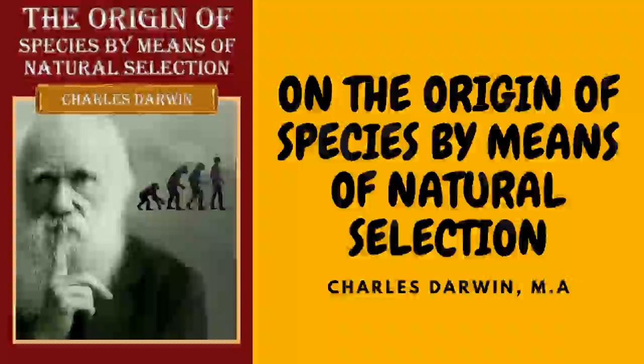Moreover, the possibility of making distinct races by crossing has been greatly exaggerated. There can be no doubt that a race may be modified by occasional crosses if aided by the careful selection of those individual mongrels which present any desired character; but that a race could be obtained nearly intermediate between two extremely different races or species, I can hardly believe. Sir John Sebright expressly experimentized for this object and failed. The offspring from the first cross between two pure breeds is tolerably and sometimes extremely uniform; but when these mongrels are crossed one with another for several generations, hardly two of them will be alike, and then the extreme difficulty or rather utter hopelessness of the task becomes apparent.